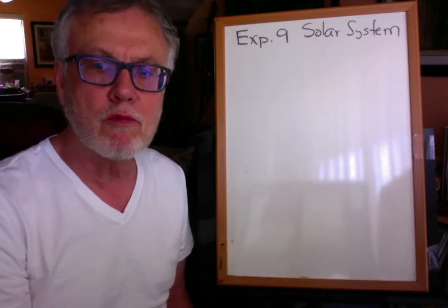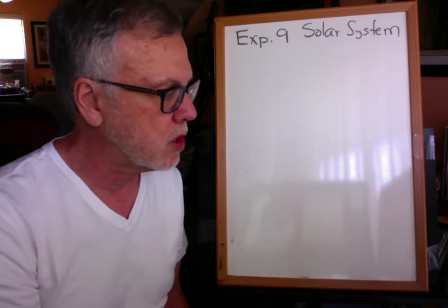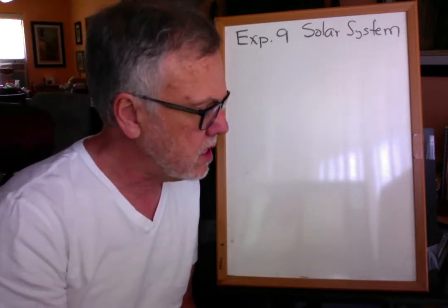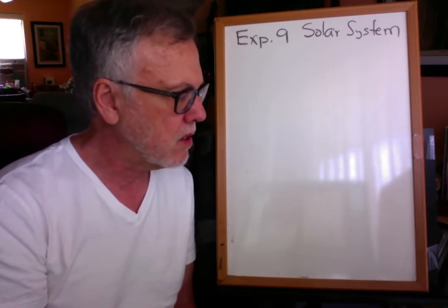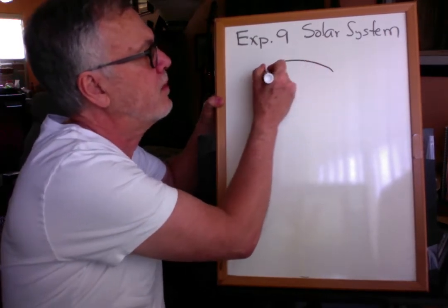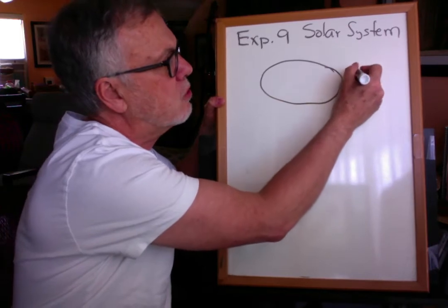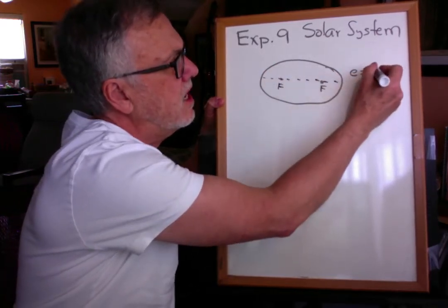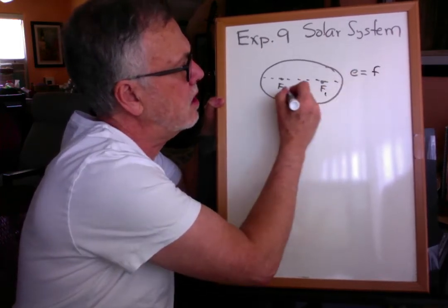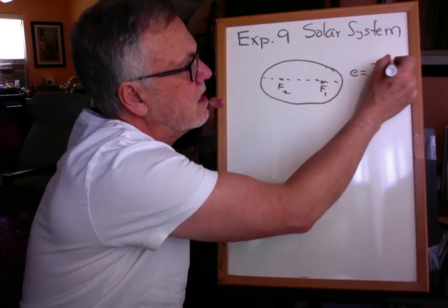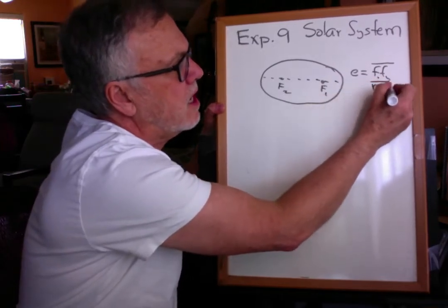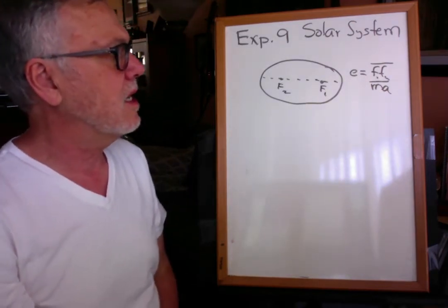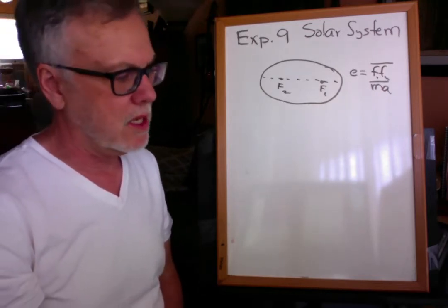First off, read the very beginning of the experiment, and then fill out the questions on the top of page 110 from that reading. Just look at the definitions. Remember, eccentricity is for an ellipse — just how much squishedness it is. Eccentricity is the length between the two foci divided by the major axis. You'll see this defined better in Experiment 7, which I'm trying to grade right now.